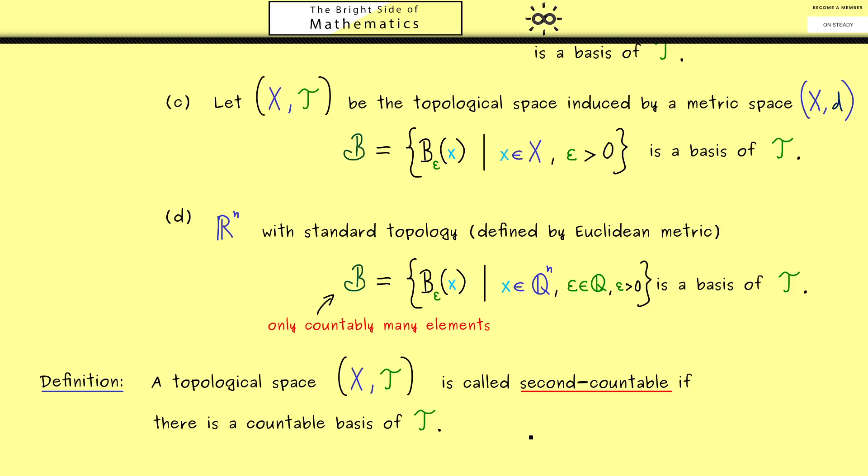Now you might ask, why is it called second-countable? Is there also a first-countable? Indeed there is, but we will only need second-countable spaces here. We will see this soon when we introduce manifolds. In fact, a manifold will be defined as a topological space that is second-countable, also a Hausdorff space, and that also fulfills a third property.